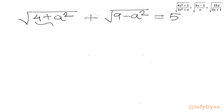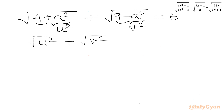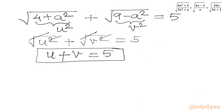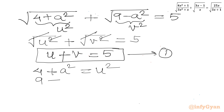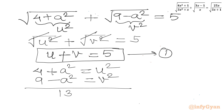Let us consider 4 plus a² equal to u² and 9 minus a² equal to v². So our equation becomes square root of u² plus square root of v² equal to 5, which simplifies to u plus v equal to 5 — equation number 1. Adding the two substitution expressions gives u² plus v² equal to 13 — equation number 2.